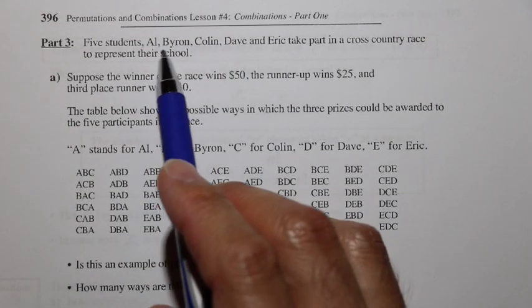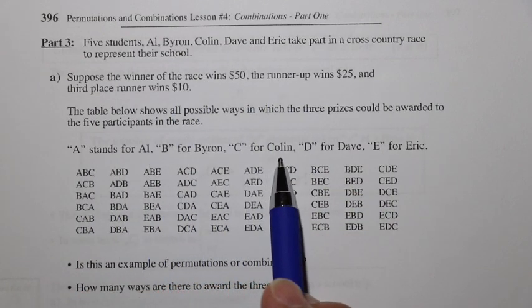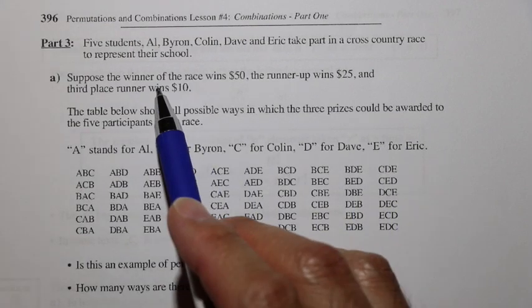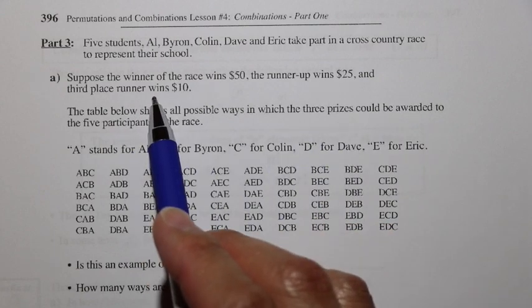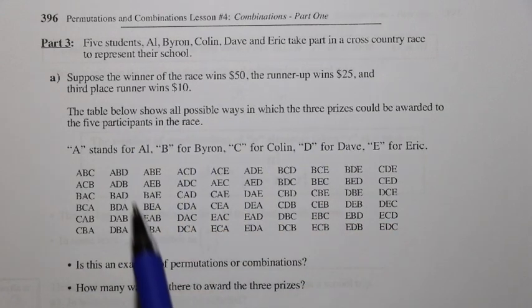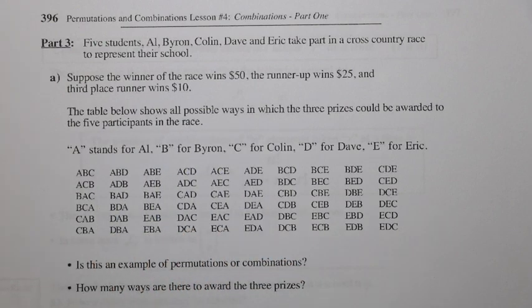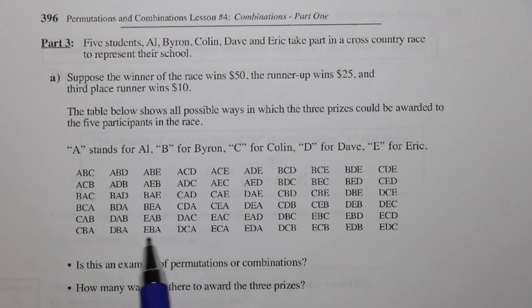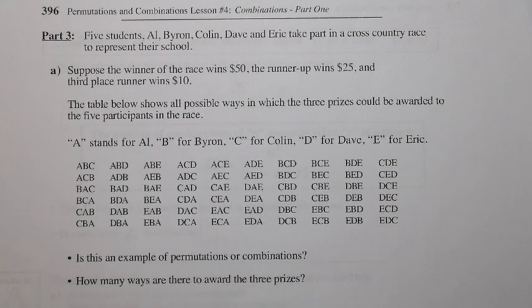Let's take a look at Part 3. We have Al, Byron, Colin, Dave, and Eric — A, B, C, D, E. The winner of a cross-country race wins $50, the runner-up wins $25, and third place wins $10. The table shows all the possible ways in which the three prizes could be awarded to the five participants. Is this an example of permutations or combinations? This is an example of a permutation.